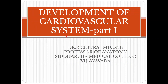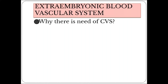In this class we will see the development of the cardiovascular system. The cardiovascular system is a part of the circulatory system. Why is there a need for the circulatory system in the embryo? In the beginning, just after ovulation, the nourishment of the embryo is by the cytoplasm of the ovum. After that, when the fertilized ovum reaches the uterine cavity, it is nourished by the secretion of the uterine glands. Then implantation of the zygote starts at the seventh day, so the implanted embryo can derive nutrition from the eroded endometrial wall of the uterus.